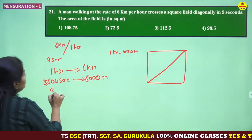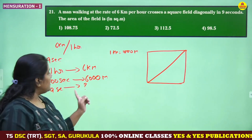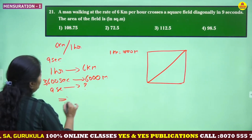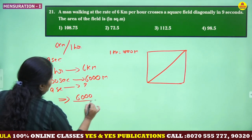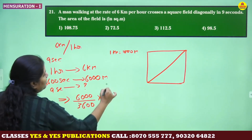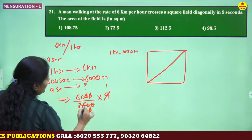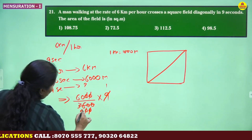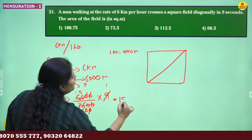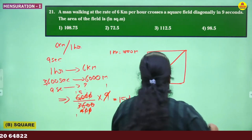So in 9 seconds, how much distance did he cover? That is the question. Distance equals 6000 divided by 3600 multiplied by 9. Simplifying: 9 fours are 36, cancelling zeros, we get 4 ones, 4 fives — so the distance covered is 15 meters. So what is the distance covered by him in 9 seconds? 15 meters.